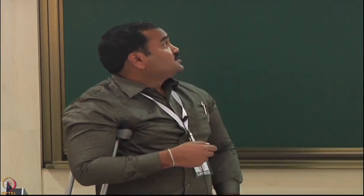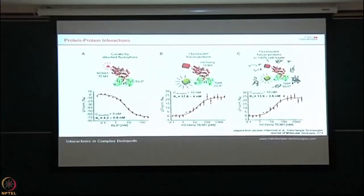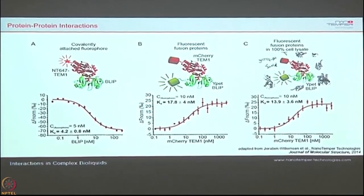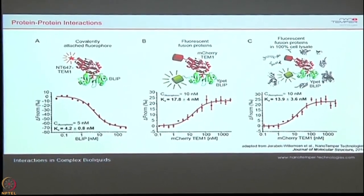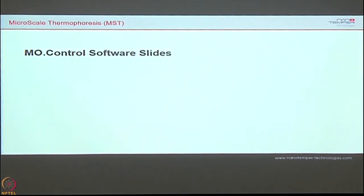Any one of the binding partners should be labeled — it can be either A or B. There is no mandate that you should label only a protein; you can label a small molecule or any partner, but the binding affinity does not change at all. That is the main USP of this approach. These are some examples of the variety of interactions for which this technique works successfully.